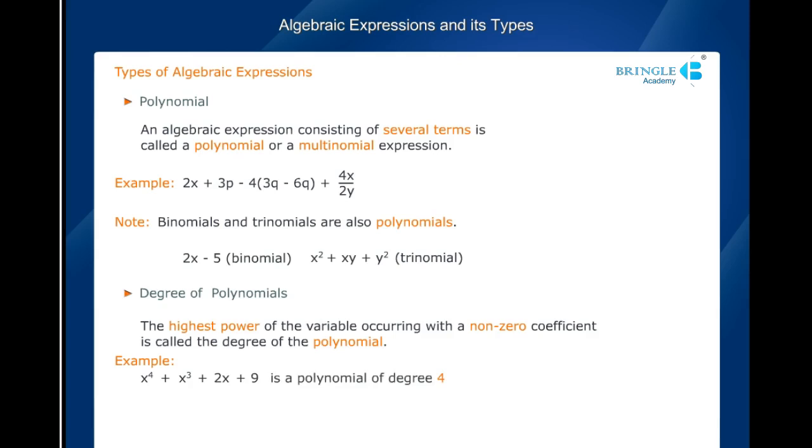As 4 is the highest power to which any of the given terms have been raised. Consider another example, 9 + 3x² + 4x³ + x⁷. Clearly, the last term has the highest exponent. Thus, this is a polynomial of degree 7.